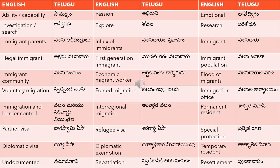The next word is economic migrant worker, which means 'arthika valasa karmikudu'. Economic means 'arthika'. Next is flood of migrants — 'valasa darula varada'. Influx of immigrants and flood of migrants are related concepts. Because the English uses 'flood', we use 'varada' (flood) in Telugu: 'valasa darula varada'.